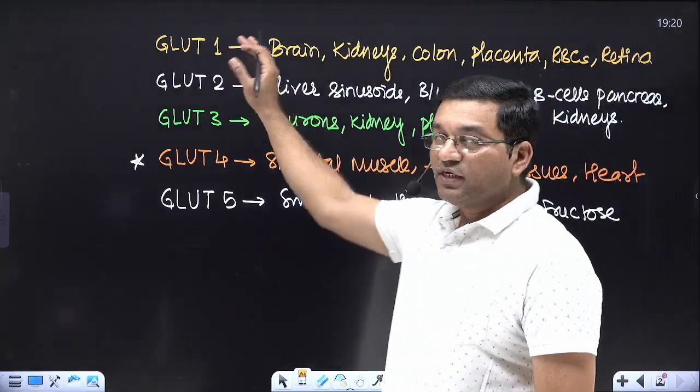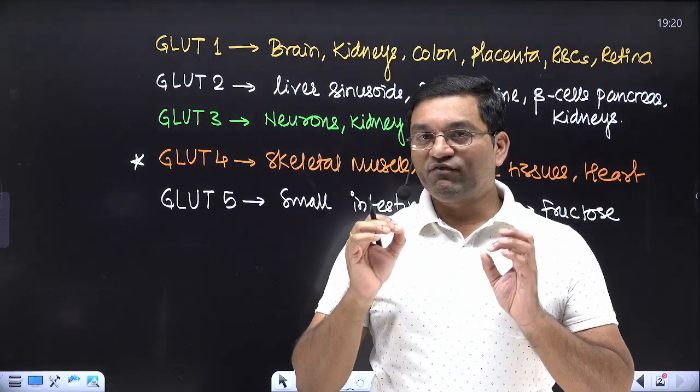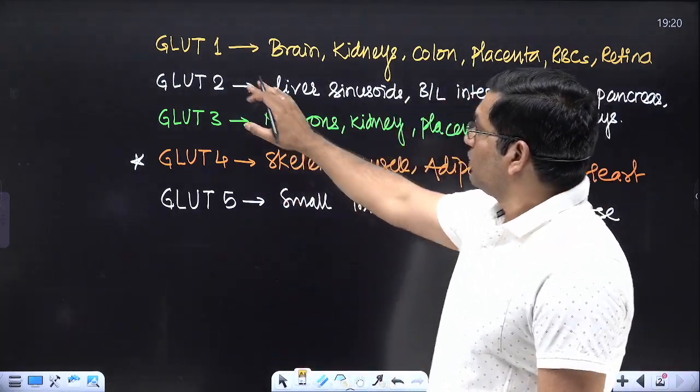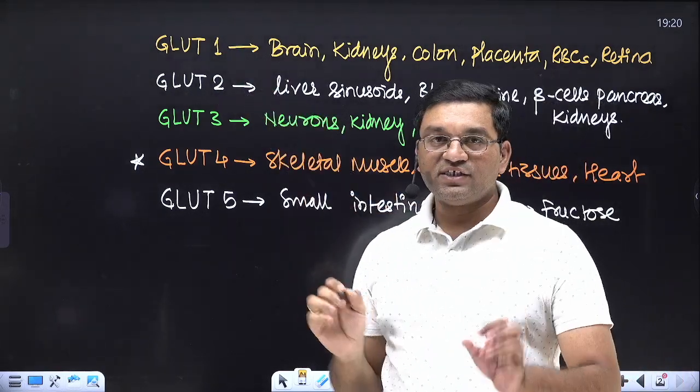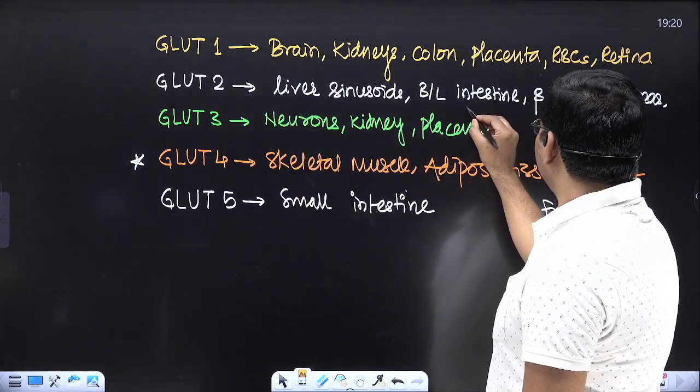GLUT-1 is widely distributed and is responsible for basal glucose uptake. GLUT-2 is present on the basolateral surface of intestine, beta cells of the pancreas, kidney, and liver sinusoids.